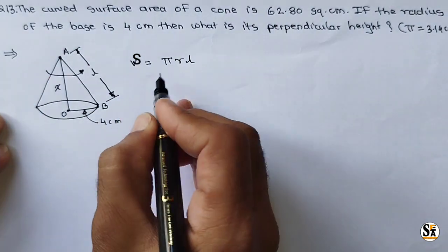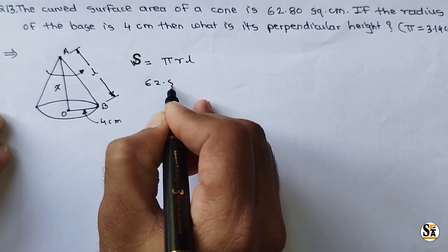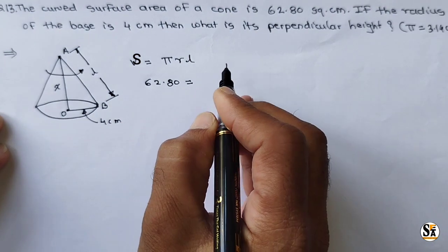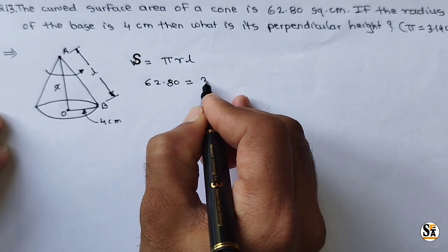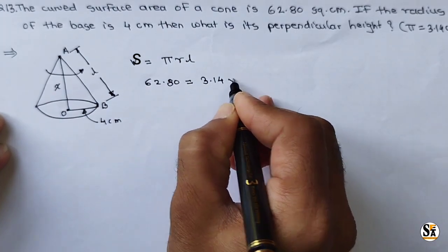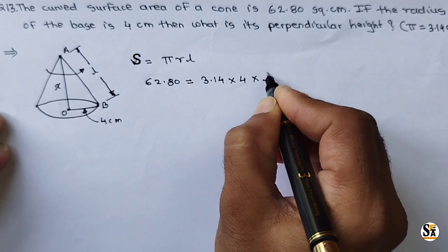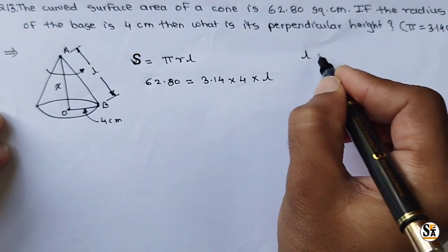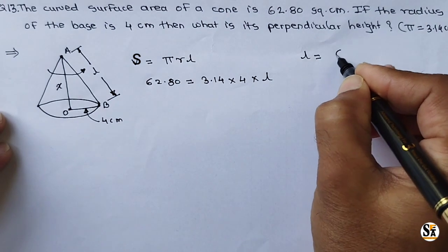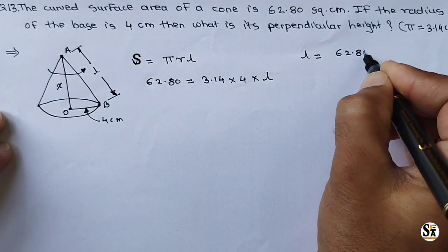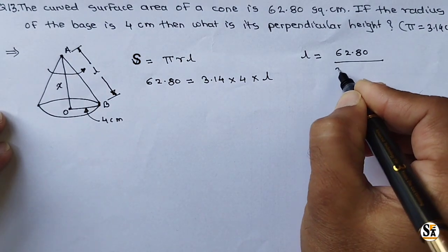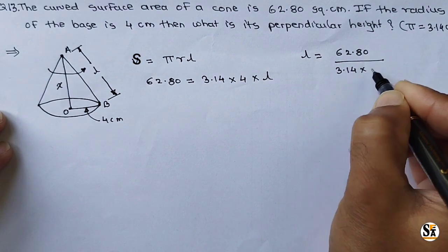So S is given, that is 62.80 equals π value is given 3.14, and R is given 4 centimeter, and we have to calculate L. So just calculate L equal to 62.80 divided by 3.14 into 4.